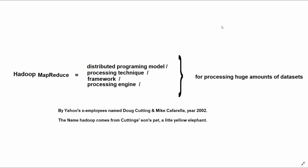So today we want to talk about Hadoop MapReduce. What will be Hadoop MapReduce? Hadoop MapReduce is an open source distributed programming model, processing technique or framework or processing engine for processing huge amounts of data. Remember, it is a programming model or technique. It is not a programming language.